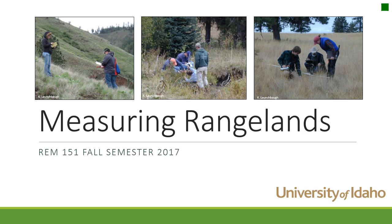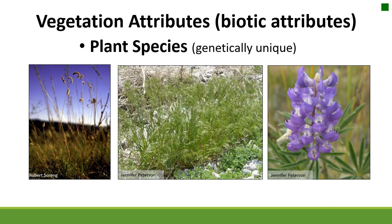Welcome to Rangeland Principles. My name is April Hewlett and I'm with the University of Idaho. Today we're going to talk about measuring rangelands and discuss some of the tools and methods we use to do that. We've talked about a lot of the abiotic attributes you might want to collect on a rangeland, things like soil texture and soil depth. Those attributes are really important when thinking about rangeland health, but there are also biotic attributes we should measure, and we're going to talk about some of the vegetation attributes today.